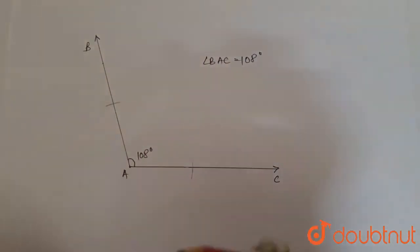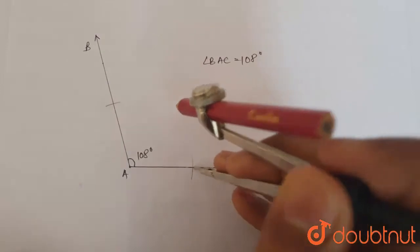And from these arcs, we make two more arcs that would intersect somewhere in between.